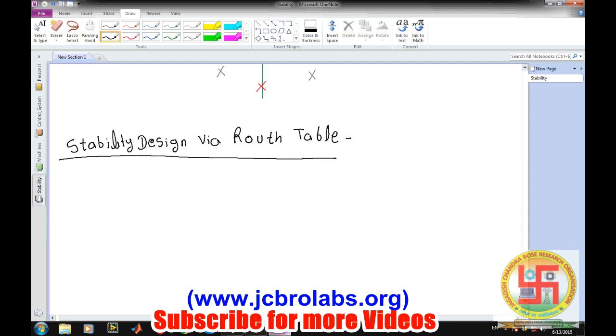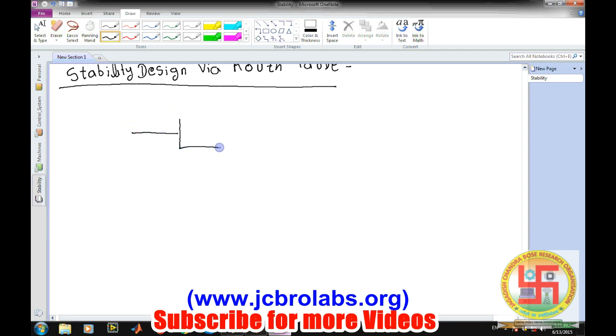Generally what happens, let's say we have a closed loop system like this and we have H(s). We have a feedback closed loop system. This is our input R(s) and here we have a unit gain feedback system. Let's say we take an example of unit gain feedback system where H(s) is given as K divided by s times (s plus 7) times (s plus 11).